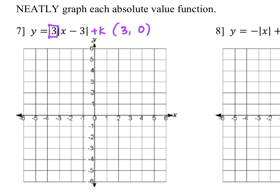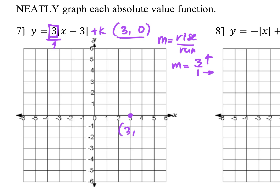Let's plot the vertex at 3 and 0. The slope here is 3 over 1, which means rise over run — go up 3 and right 1. From the vertex at (3, 0), I go up 3 and right 1 for my first point, then repeat for a second point. Connecting those gives the first part of the graph.